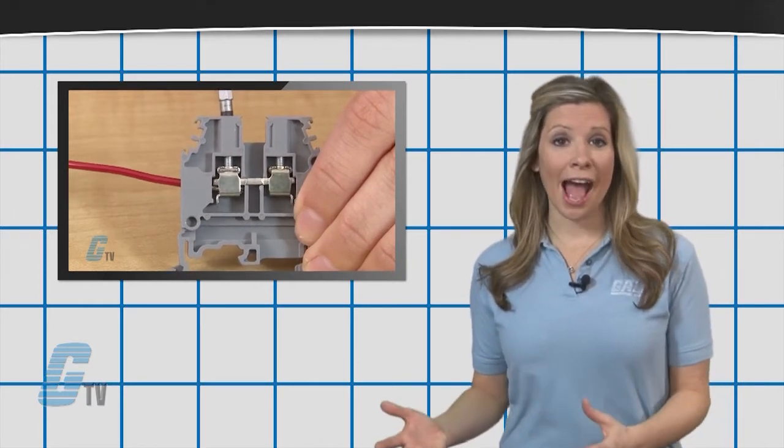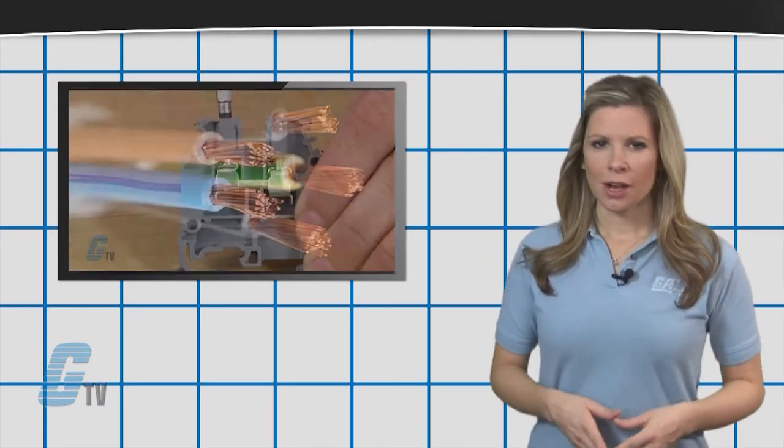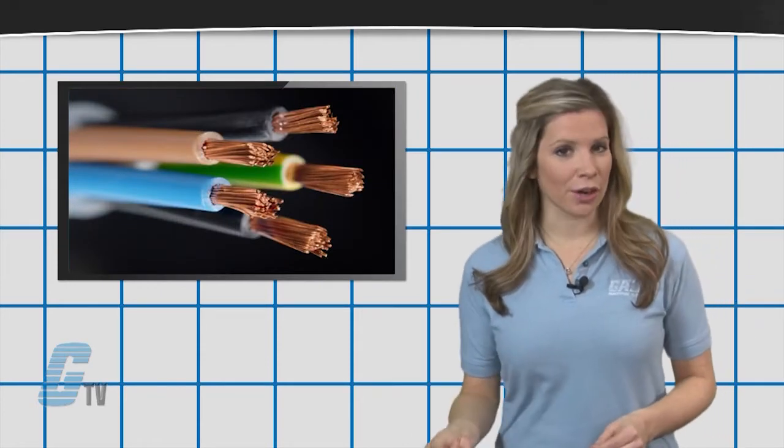But with the malleability of copper, the wires tend to get used to this pressure. Over time, the copper could become thinner and loosened.